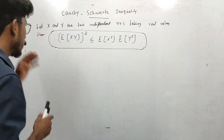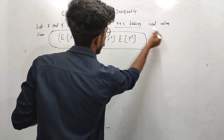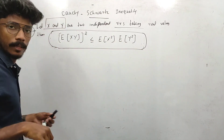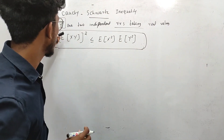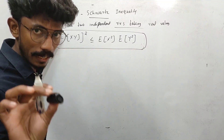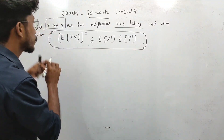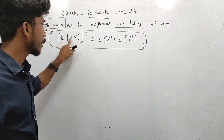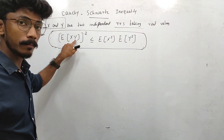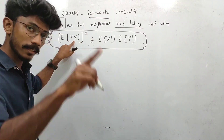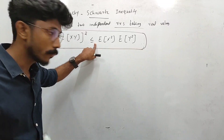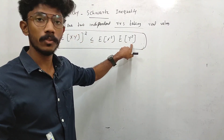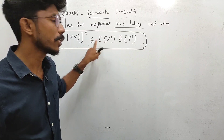Let X and Y be two independent random variables. The expectation of XY the whole square is less than or equal to expectation of X square into expectation of Y square. This is the statement of Cauchy-Schwarz inequality.